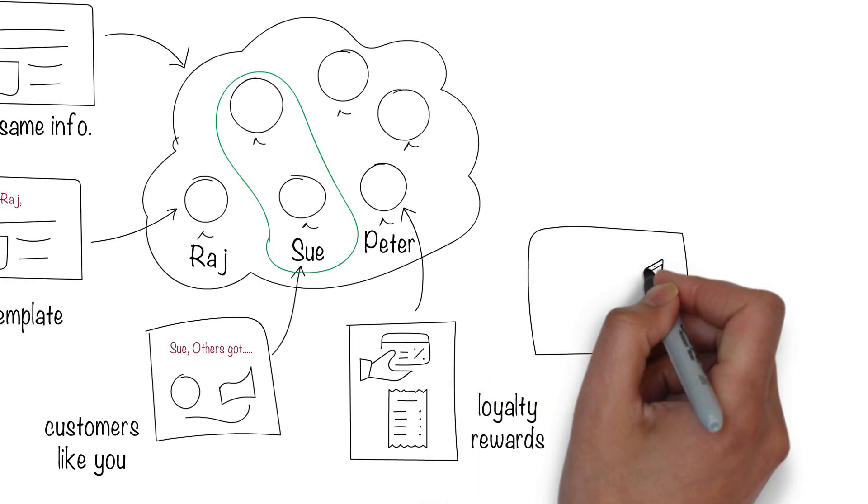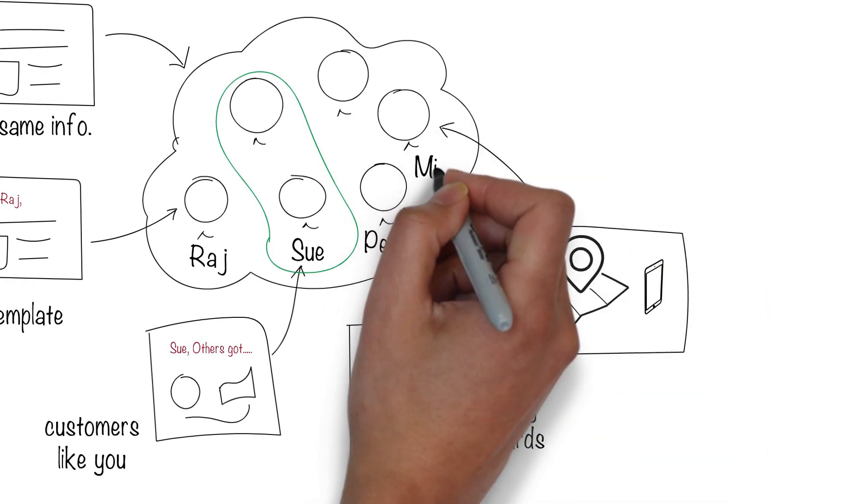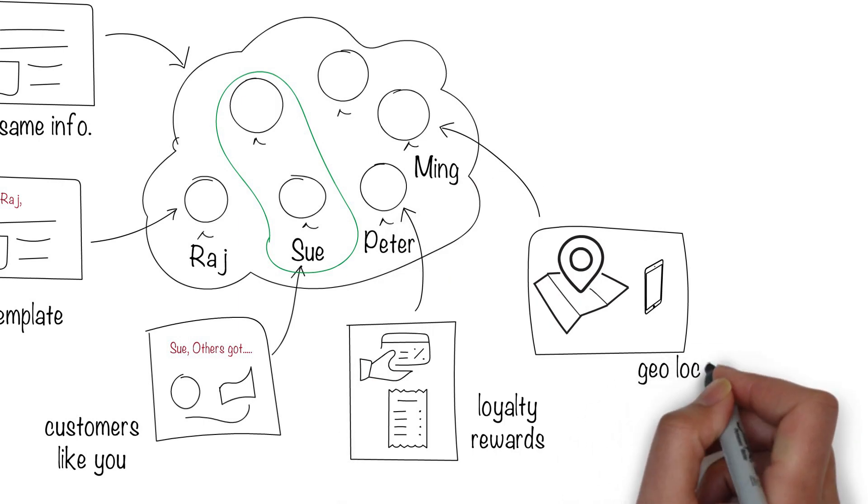When mobile phones became common, we used location and other data to offer personalized ads to customers to entice them to shop at a neighborhood store or eat at a local restaurant.